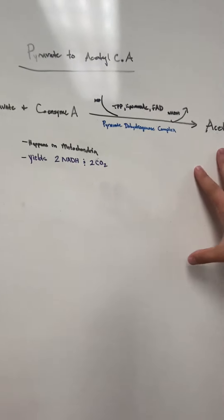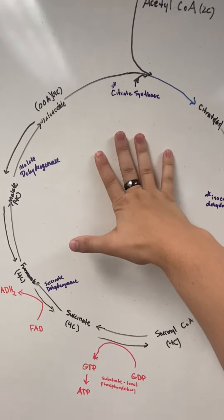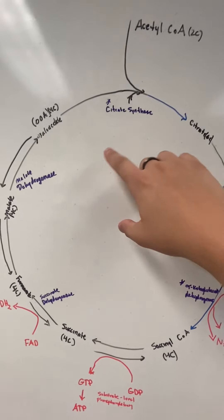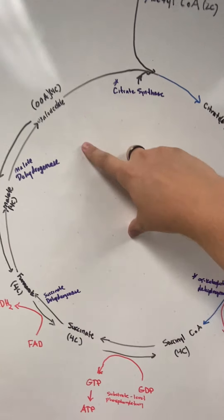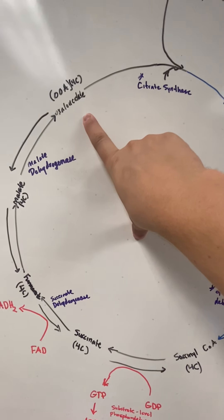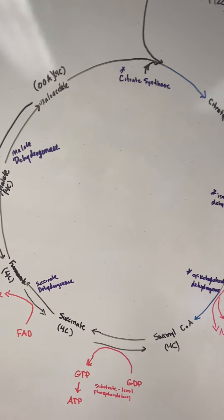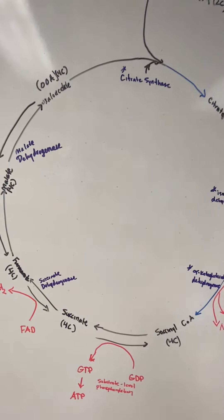Okay, so now we have acetyl-CoA. How it enters this cycle is it helps push the wheel around. We have oxaloacetate, or I think it's OOA, it might be OAA. It's a four-carbon unit.